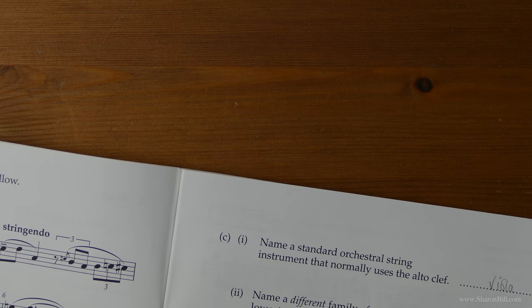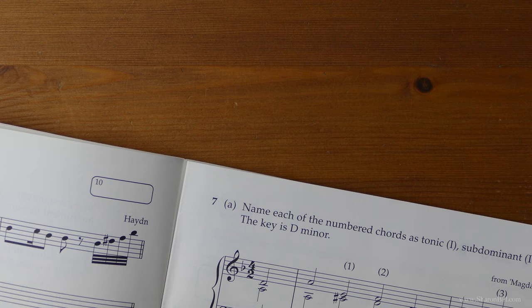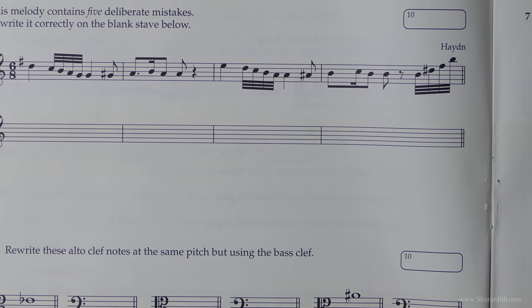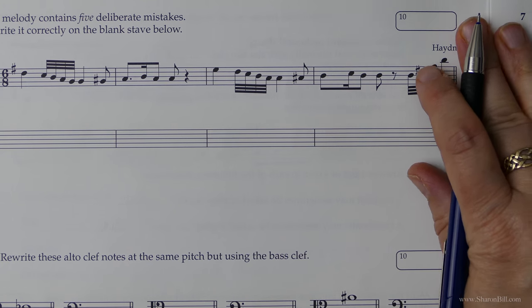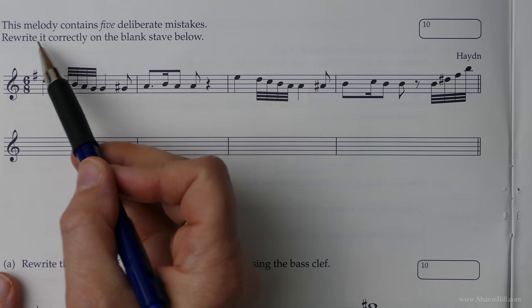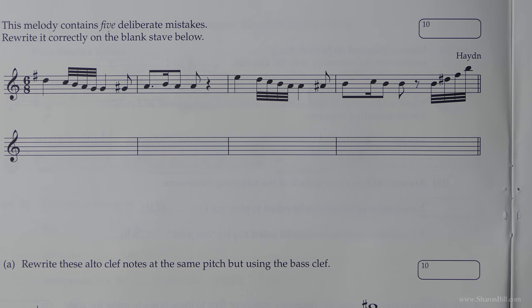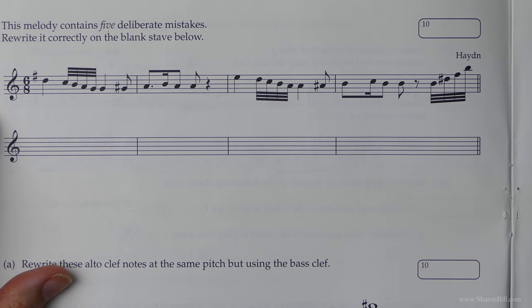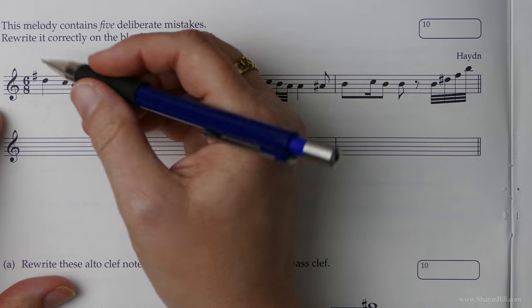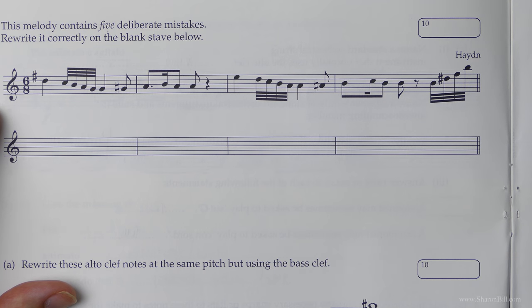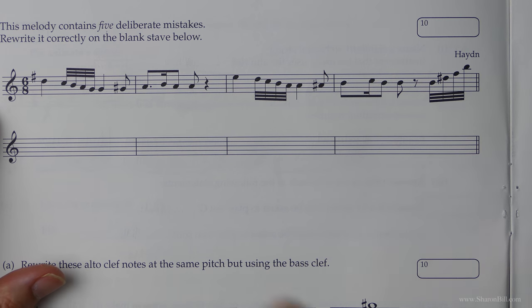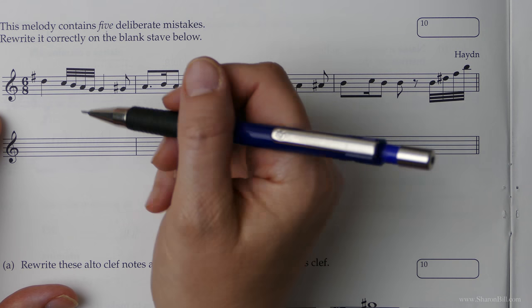Let's turn the page and see what's going to greet us. Oh, I like these questions. This melody contains five deliberate mistakes. How naughty. Rewrite it correctly on the blank stave below. Well, let's find the mistakes and then we can worry about that afterwards. We'll do the thinking and then it's just copying really. Have a glance through yourself. Make sure you've had a look first of all. Press pause, see what you can find and then reaccess the video.